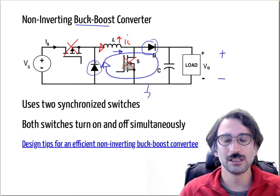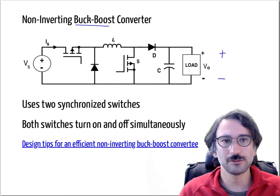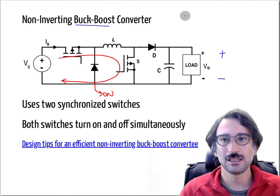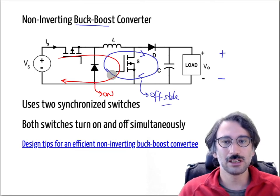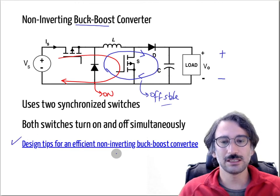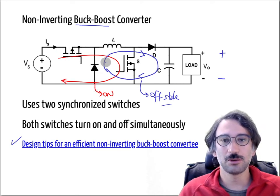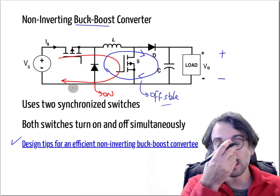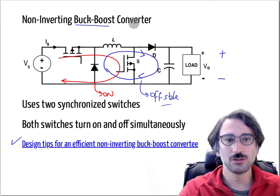At the end of the day, if the polarity of the voltage is important, you can get the same polarity with respect to the load voltage. To summarize: the on state charges the inductor, and the off state discharges it. This can be run as a non-inverting buck-boost converter. I advise you to look at the reading material for design tips on efficient non-inverting buck-boost converters, since you need to choose efficient MOSFETs and diodes to achieve satisfying overall efficiency.